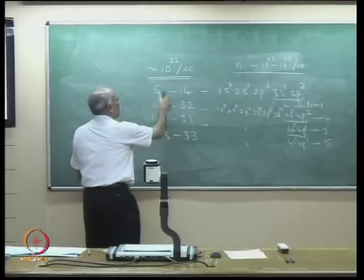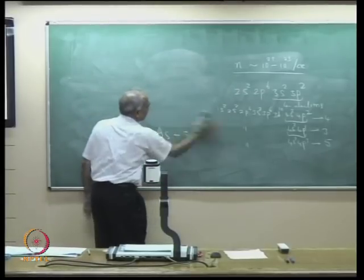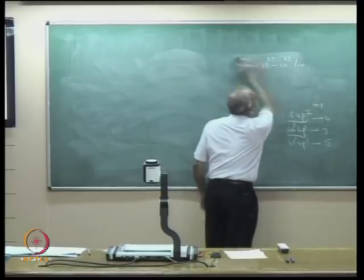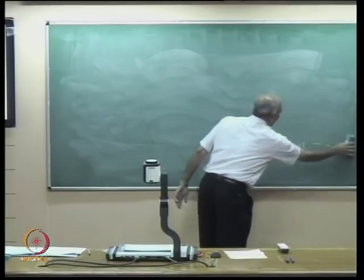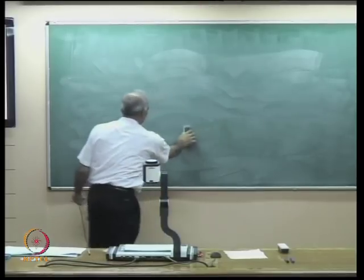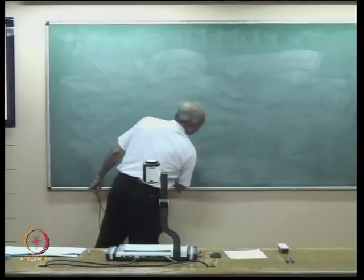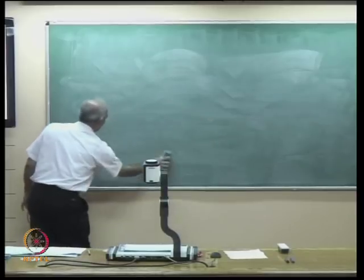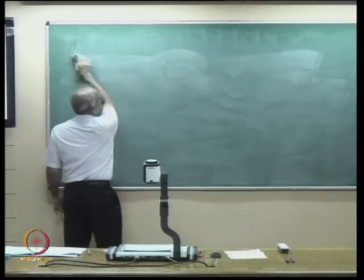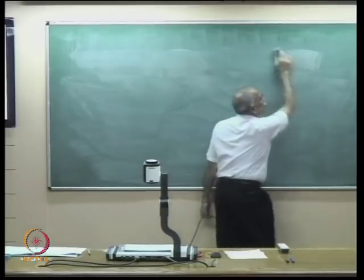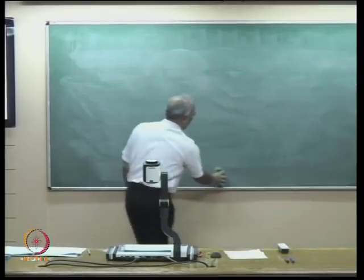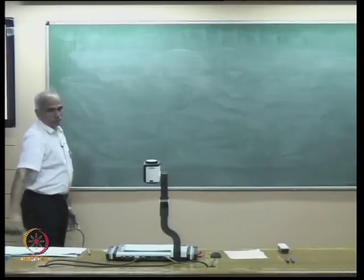Let me come to the second issue. In this discussion I have made use of the fact that most of the useful semiconductors are crystalline. Of course, there are amorphous semiconductors, but most of the useful semiconductors in optoelectronics are crystalline in nature.